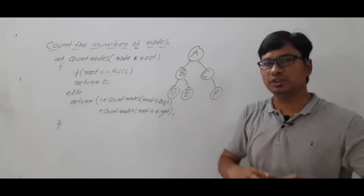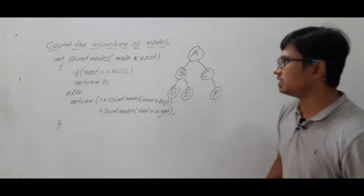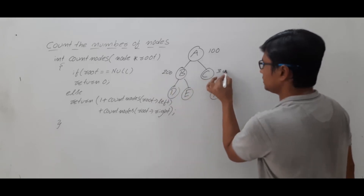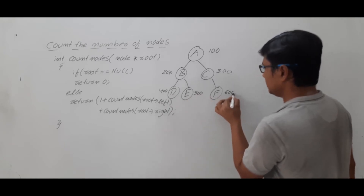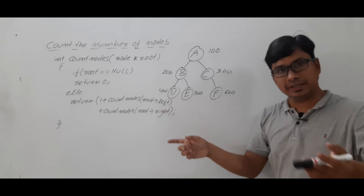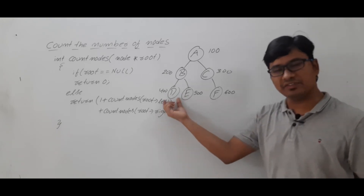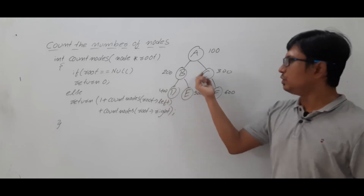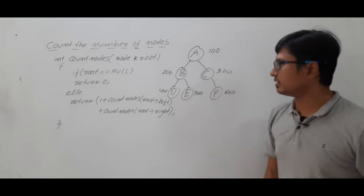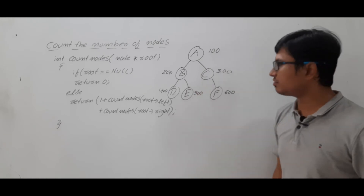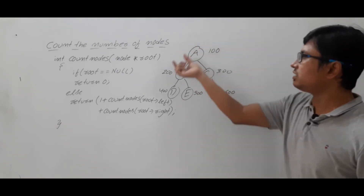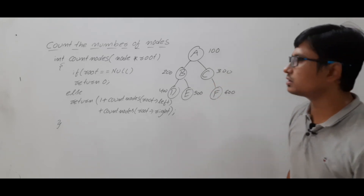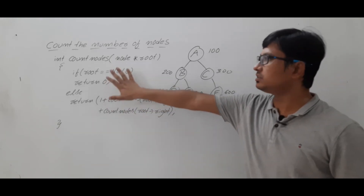In the last video I represented this binary tree as a doubly linked list. Now I will write the address for each node. This is 100, this is 200, this is 300, this is 400, this is 500, and this is 600. Node 400's left and right will be null since it is a leaf node. Node 200's left is 400 and right is 500. Node 300's left is null and right is 600. Node 100's left is 200 and right is 300.